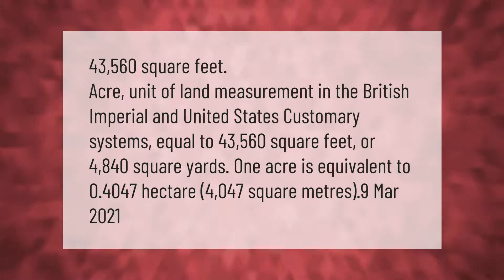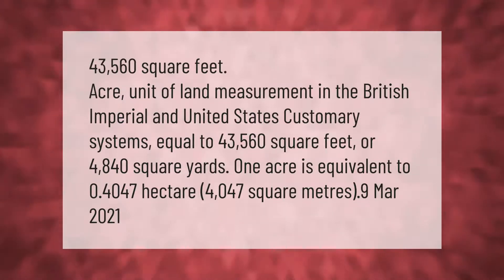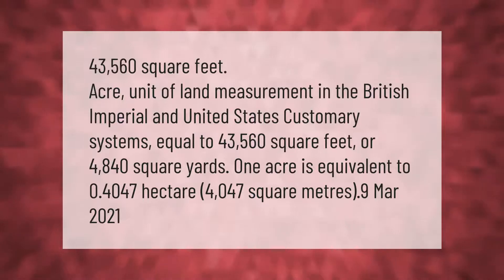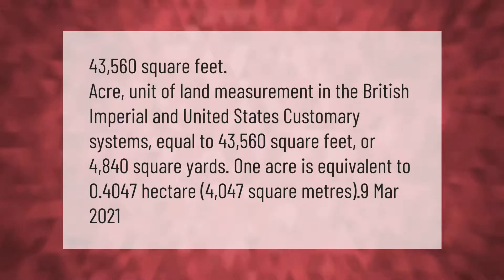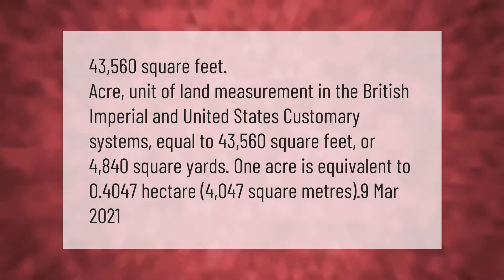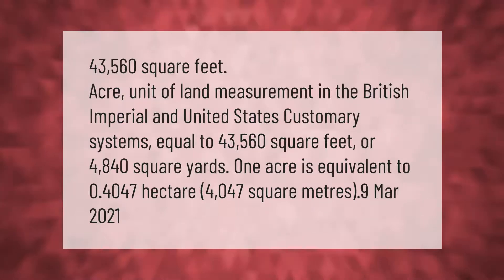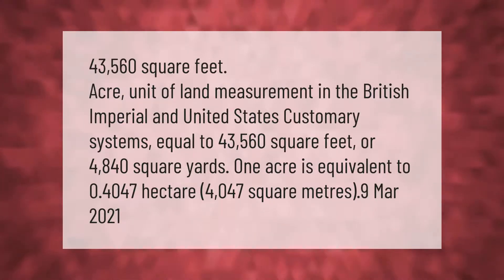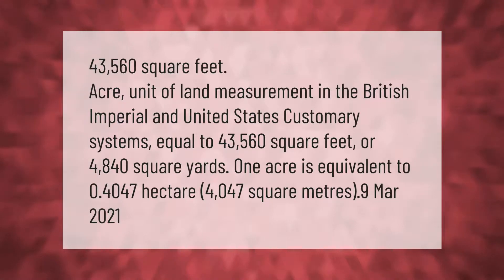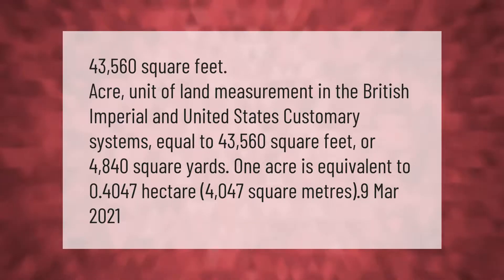One acre is a unit of land measurement in the British Imperial and United States customary systems, equal to 43,560 square feet or 4,840 square yards. One acre is equivalent to 0.4047 hectares or 4,047 square meters.